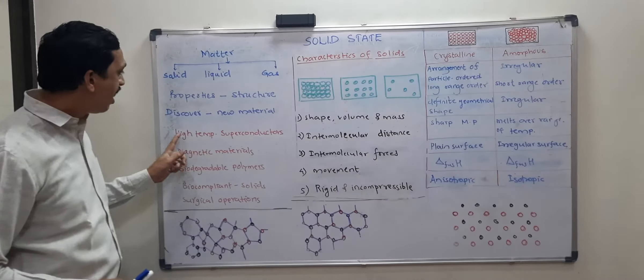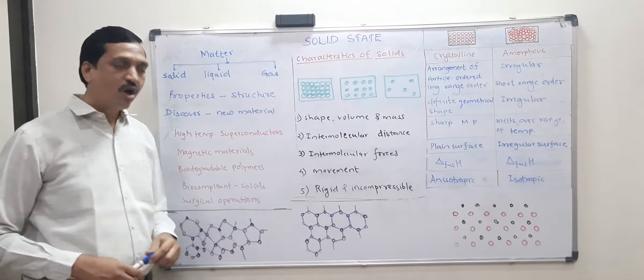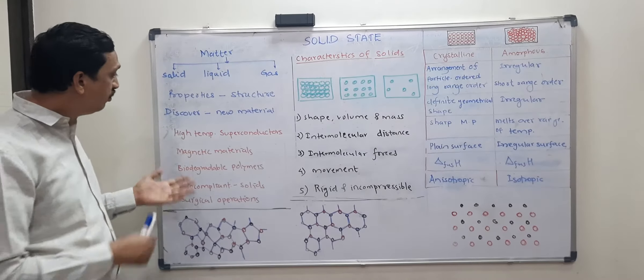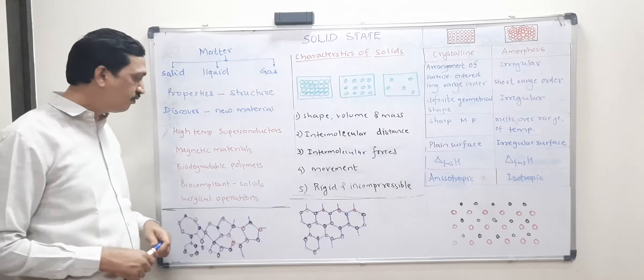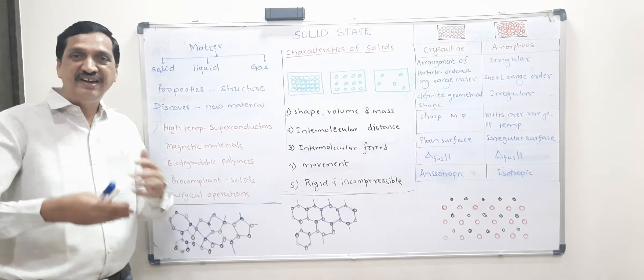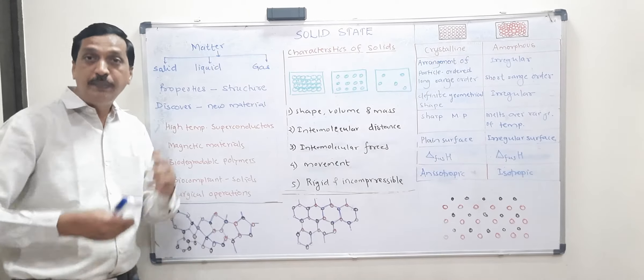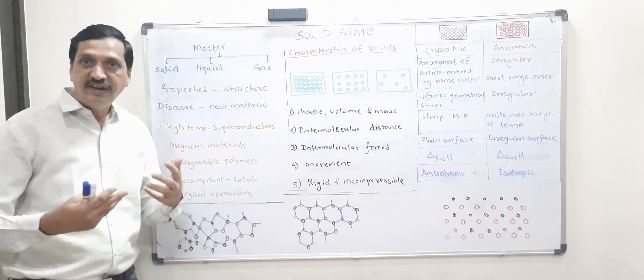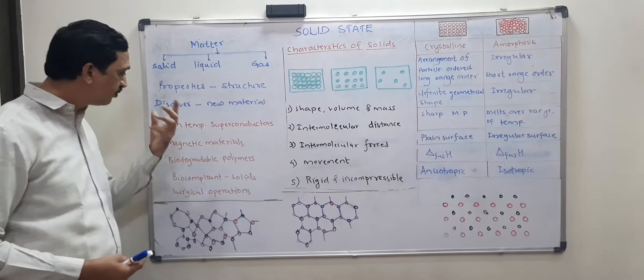Like we will be able to invent high temperature superconductors or we can find out new magnetic materials. Or we will be able to discover the biodegradable polymers, the polymers which will be degraded by its own over a period of time. It should degrade by its own. So such kind of stuffs we can discover.